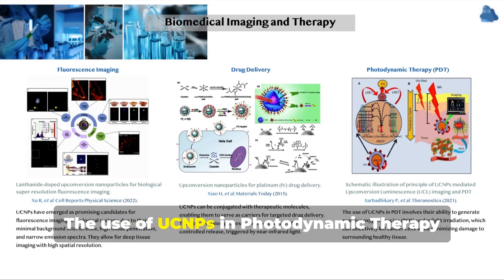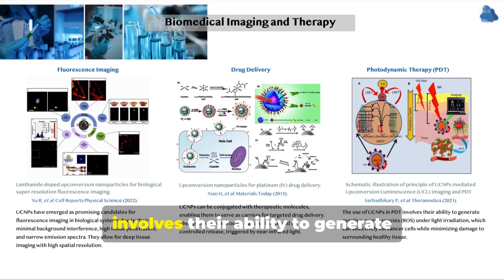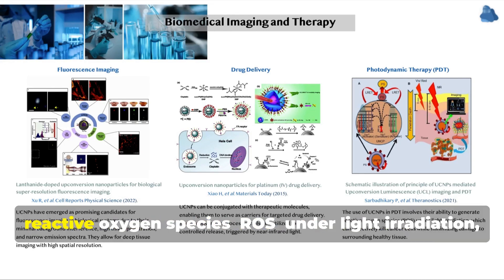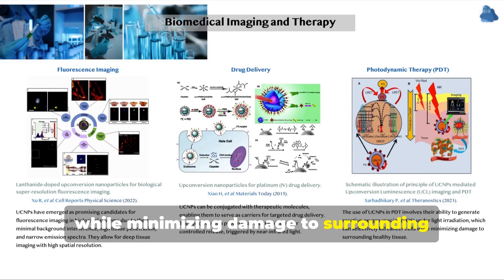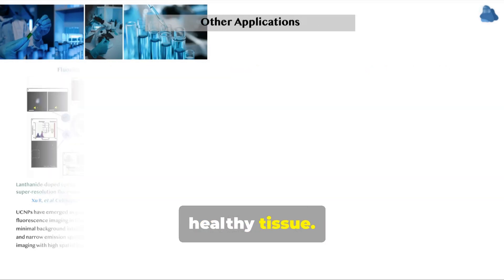The use of UCNPs in photodynamic therapy involves their ability to generate reactive oxygen species, ROS, under light irradiation, which can selectively kill cancer cells while minimizing damage to surrounding healthy tissue.